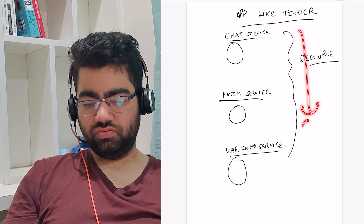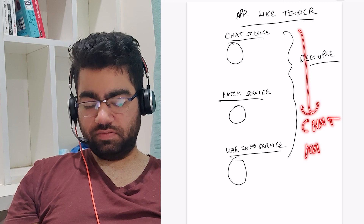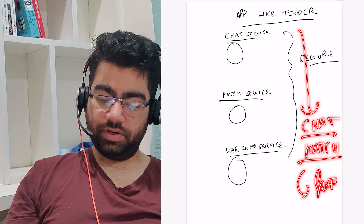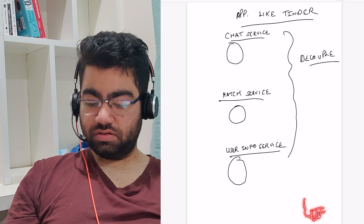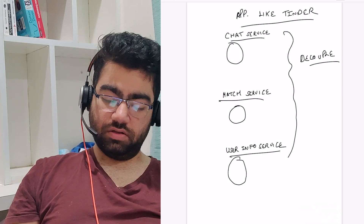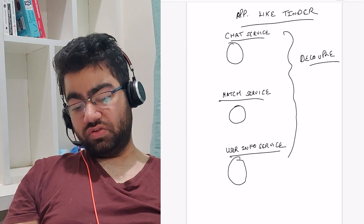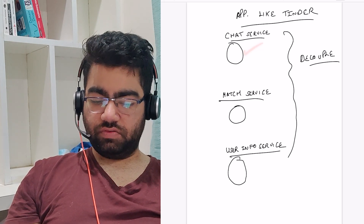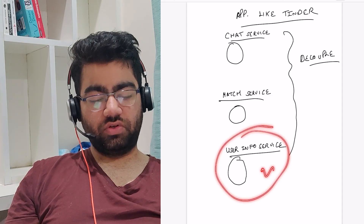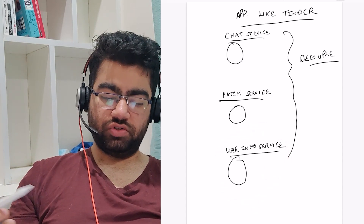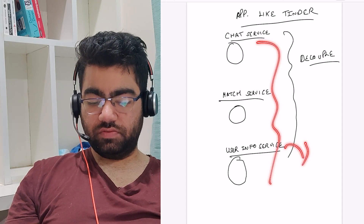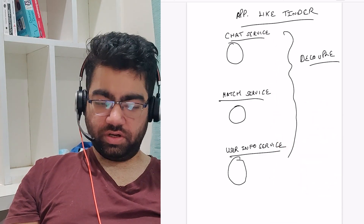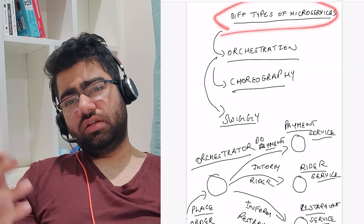Consider an app like Tinder. It has different types of things: there's chat, a match service where you match with different people, a profile section where you maintain your profile, and images for each person. There are different types of things a Tinder application manages, and for each of those you have a different service — a chat service, a match service, and a user info service, each doing a different job.